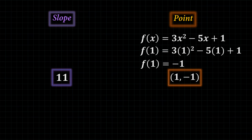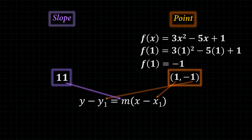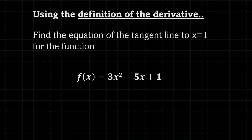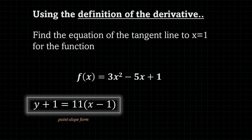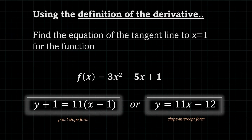With the slope and the coordinates, we can now plug them into the point-slope form, giving us y plus one equals 11 times (x minus one). If you leave your answer in point-slope form, that will be your answer. Or if they ask for slope-intercept form, you can isolate y and get that as well.